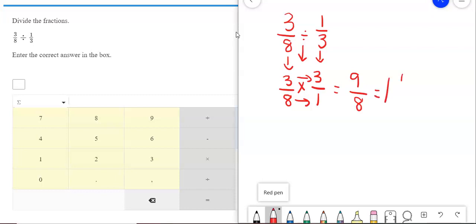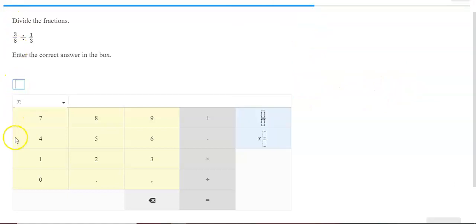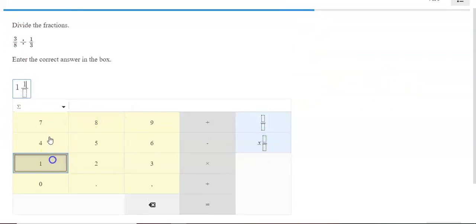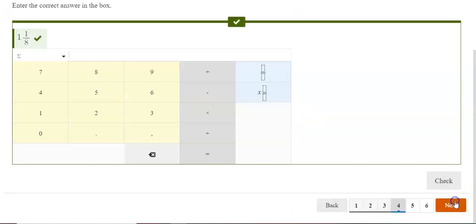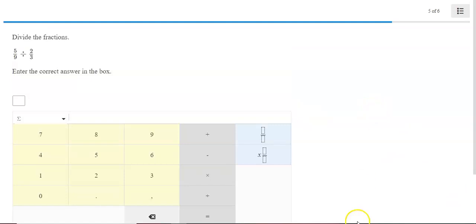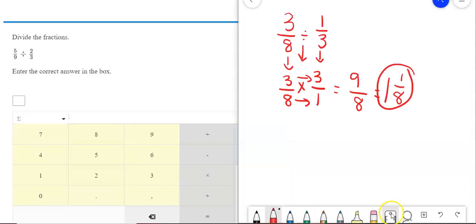Eight goes into nine once with one left over. So, I get one and one-eighth. Check my answer. There we go.